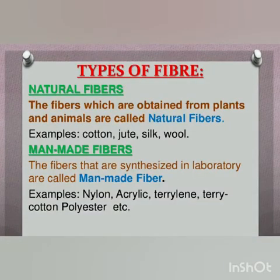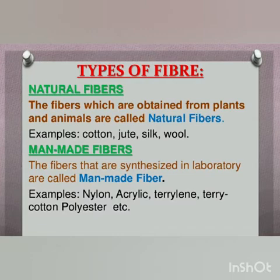Natural fibers are obtained from either plants or animals — for example, cotton, jute, silk, and wool. Whereas manmade fibers are made by using chemicals in factories.